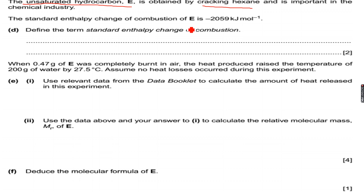The standard enthalpy change of combustion of E is minus 2059 kilojoules per mole. Define the term standard enthalpy change of combustion: it is the enthalpy change when one mole of a substance is burnt in excess oxygen under standard conditions.